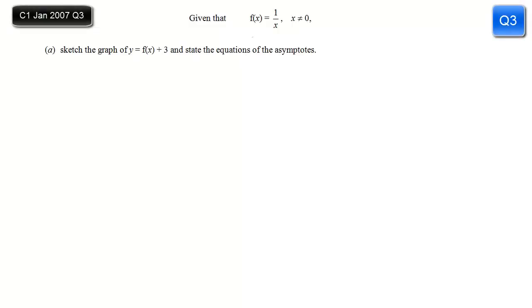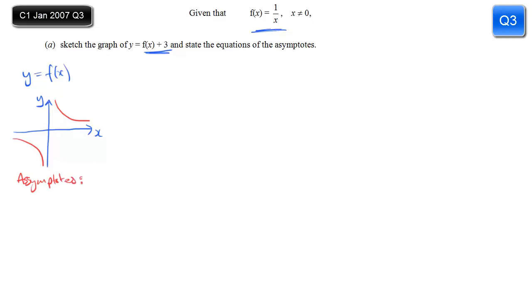We've got a function f(x) equal to 1 over x, and we simply have to sketch the graph of y equals f(x) + 3. So to start with, let's just remind ourselves what the graph of y equals f(x) looks like. So this is y equals 1 over x, the simplest reciprocal graph you can think of. You need to just know this. It looks like that and it has the x and y axis as its asymptotes, or we can give them their equations x = 0 and y = 0.